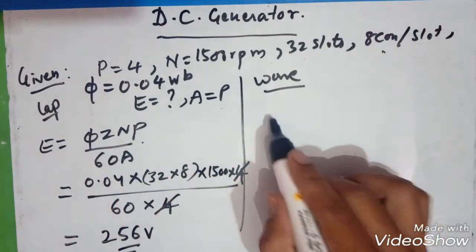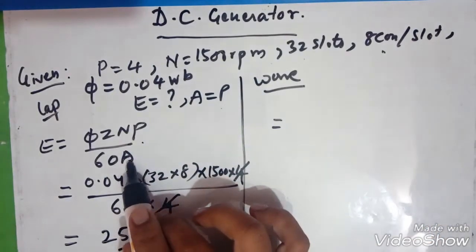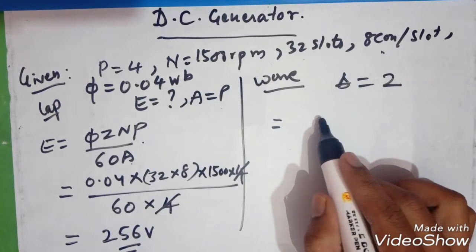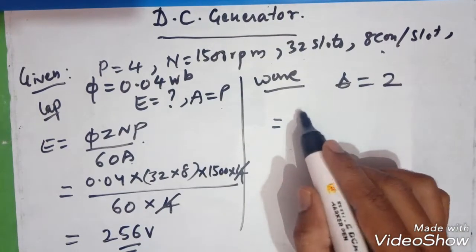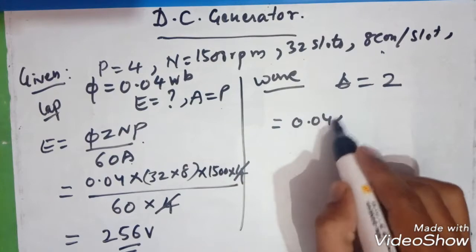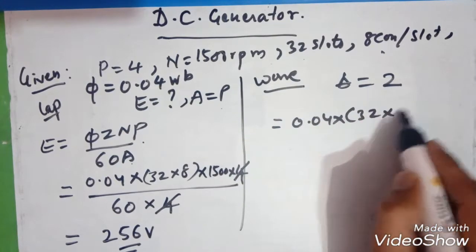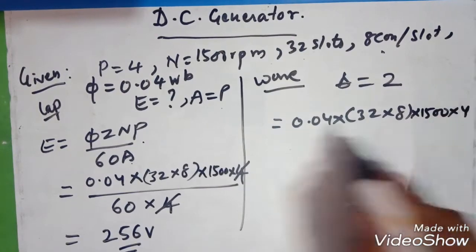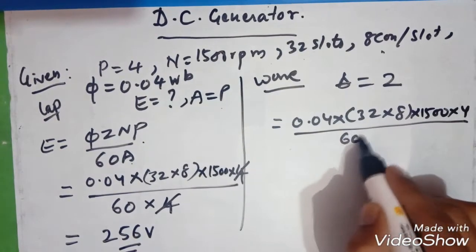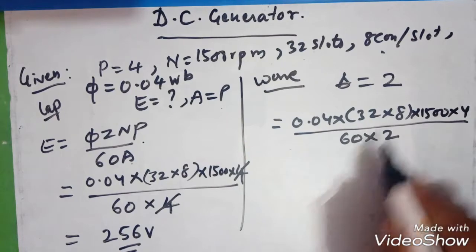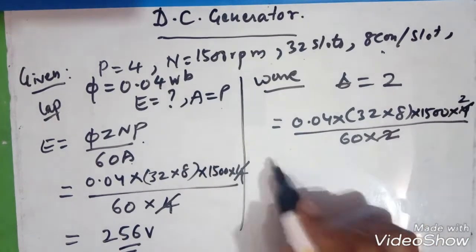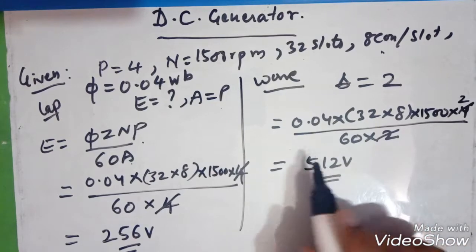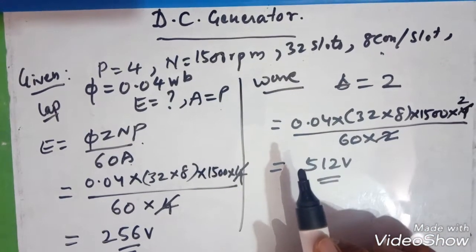For the wave winding, same formula, but we have A value as 2 in this case. So 0.04 into 32 into 8 into 1500 into 4 divided by 60 into 2 here. Simplifying, you will get 512 volts in this case.